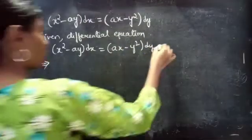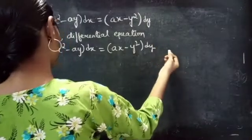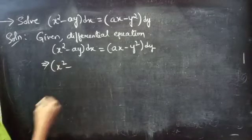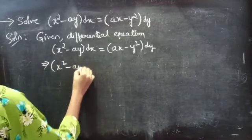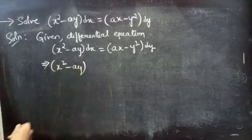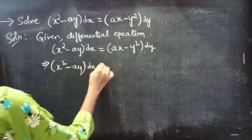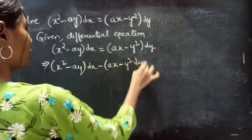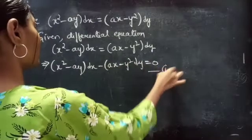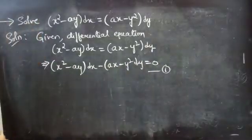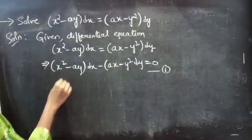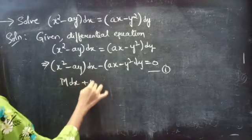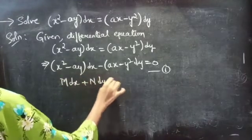Solution. Given differential equation: x squared minus ay into dx equals to ax minus y squared into dy. We can rewrite this as x squared minus ay into dx minus ax minus y squared into dy equals to 0. Consider this as equation 1. The equation is of the form M dx plus N dy equals to 0.